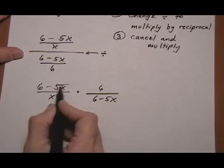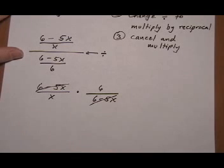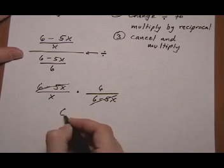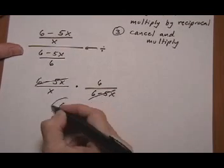Now we can cancel. Six minus five x is gone. Multiply across. And we get our final answer, six over x.